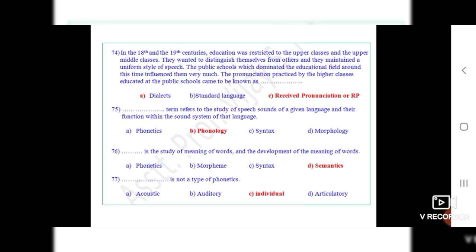Question 74: In the 18th and 19th century, education was restricted to the upper classes and the upper middle classes. They wanted to distinguish themselves from others and maintained a uniform style of speech. The public schools which dominated the educational field around this time influenced them very much. The pronunciation practiced by the higher classes educated at the public schools came to be known as dot dot dot. The correct option is C, that is received pronunciation or RP.